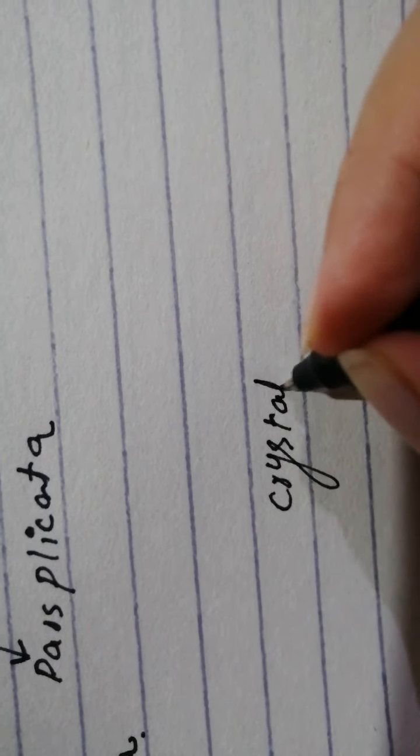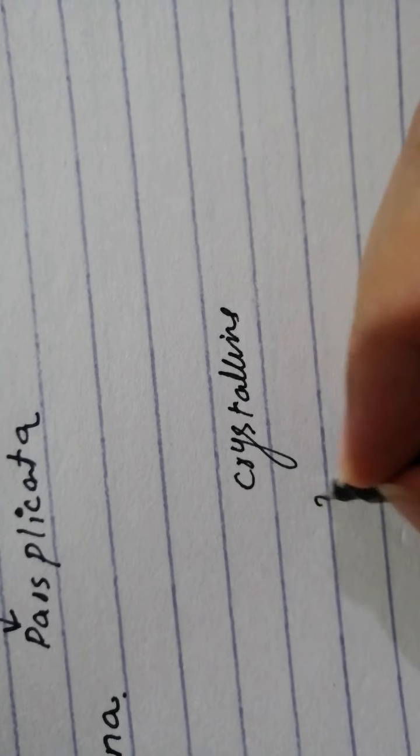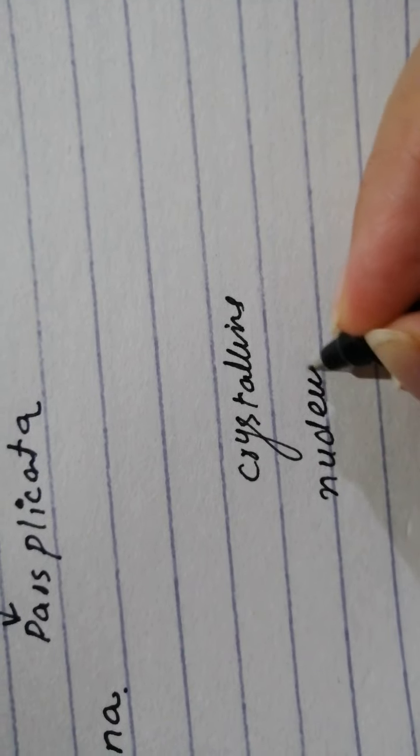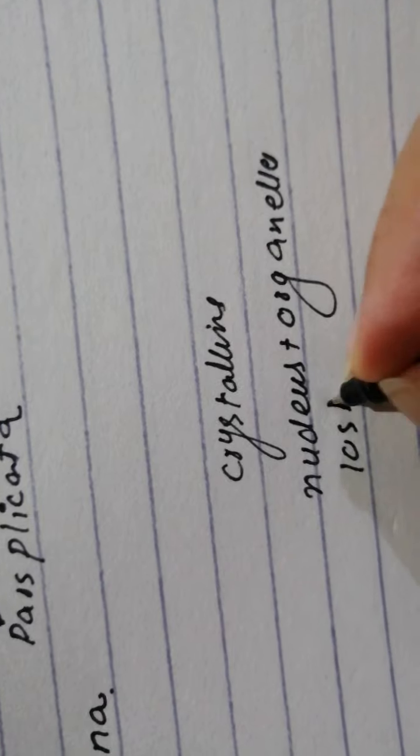So crystallins are accumulated. The nucleus and the organelles are lost. I'm hoping this kind of makes sense. They're talking about the choroid which is the last part of the vascular tunica.